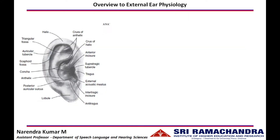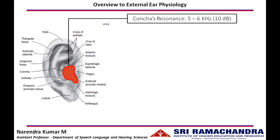The pinna has a concha which collects sound energy and directs it towards the ear canal. Because of its volume, the resonance frequency of the concha ranges between 5 to 6 kilohertz, and it enhances sound energy within this frequency range by 10 decibels.